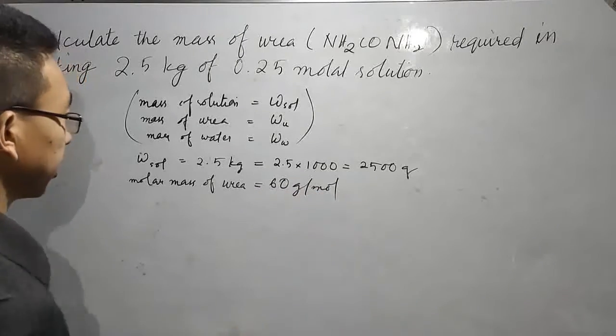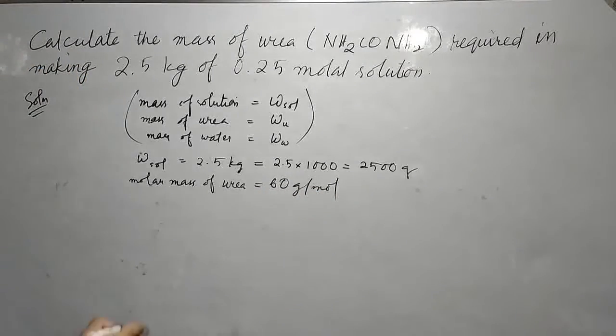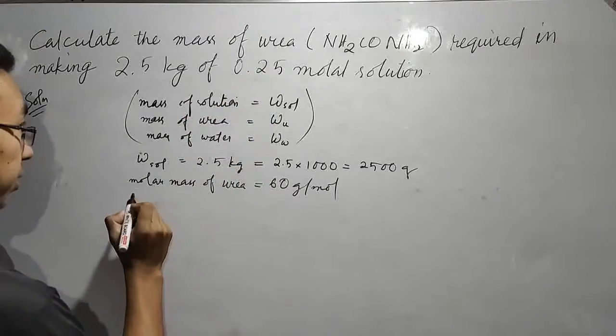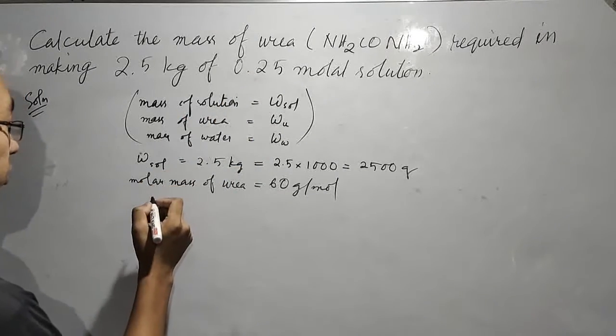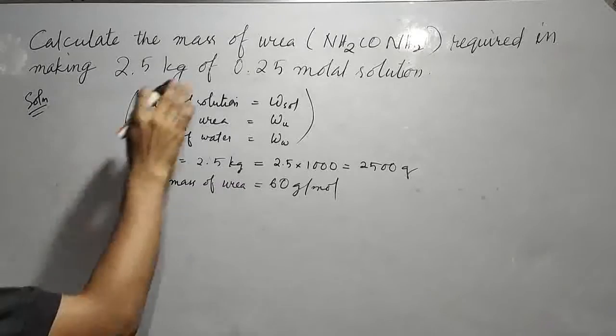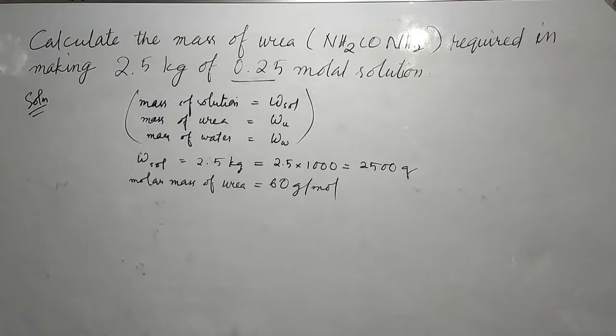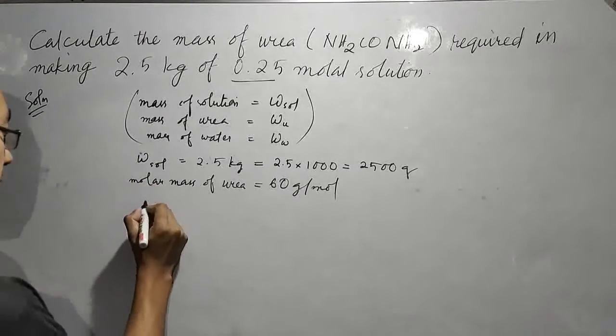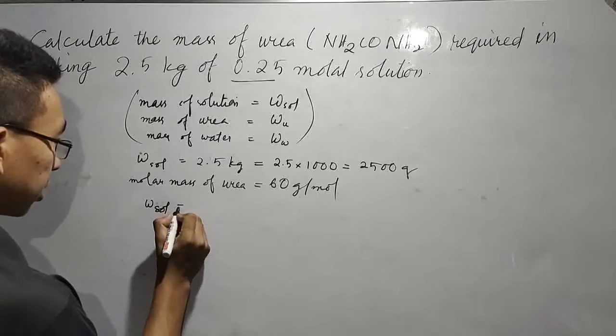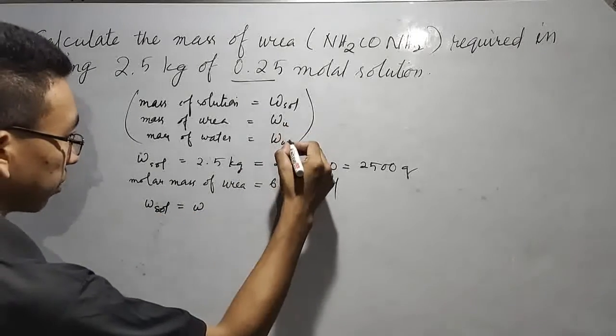After that, the molality formula. But before we move on to that, let us find out the mass of solvent. We must know the value for the mass of solvent as well. We know that mass of solution is equal to mass of solvent plus mass of the solute, that is the urea.